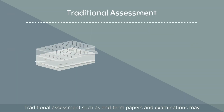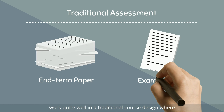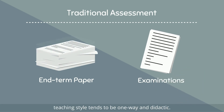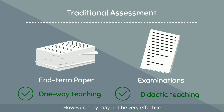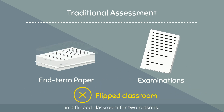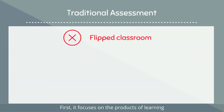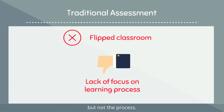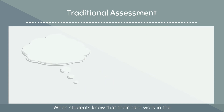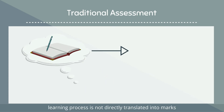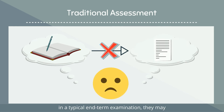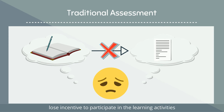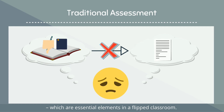Traditional assessments such as end-term papers and examinations may work quite well in a traditional course design where teaching style tends to be one-way and didactic. However, they may not be very effective in a flipped classroom for two reasons. First, traditional assessment focuses on the products of learning but not the process. When students know that their hard work in the learning process is not directly translated into marks and only textbook knowledge is required in a typical end-term examination, they may lose incentive to participate in the learning activities which are essential elements in a flipped classroom.